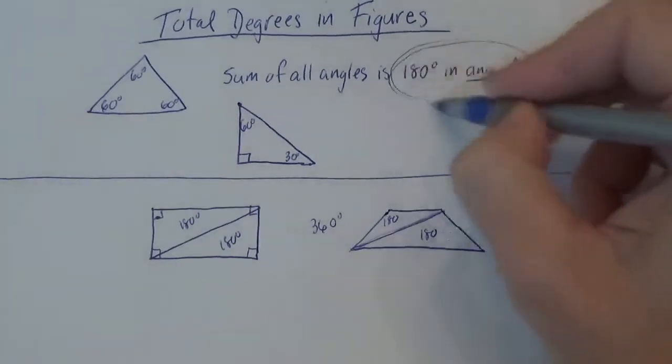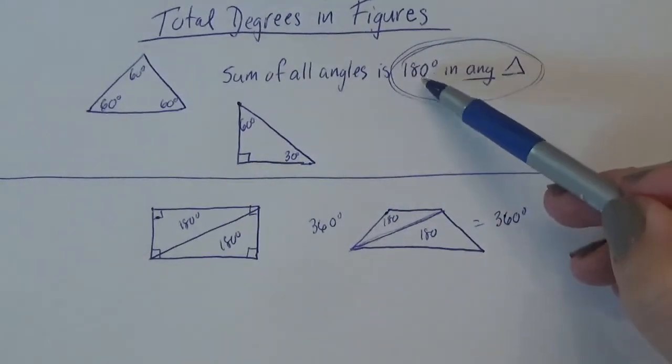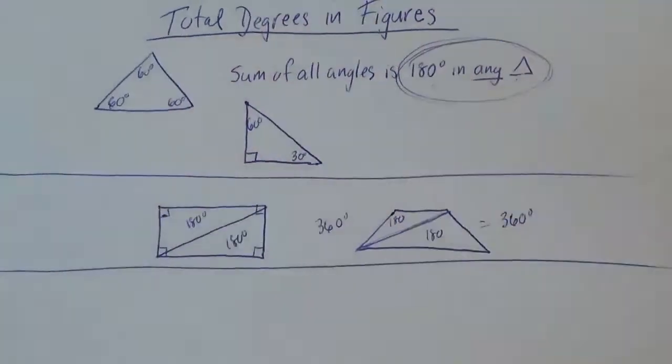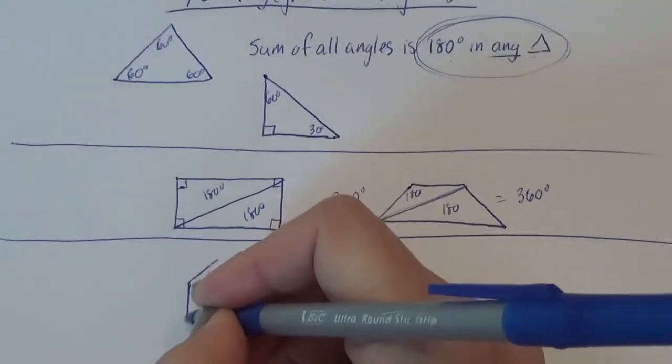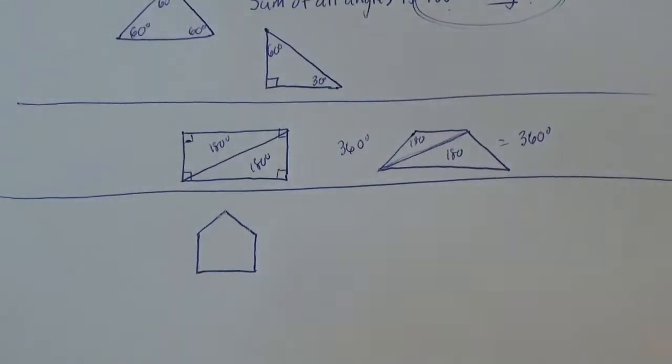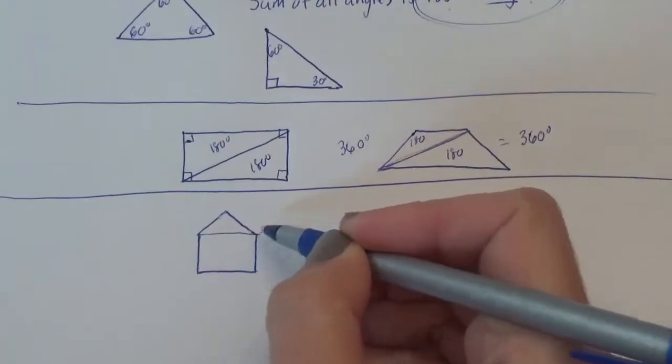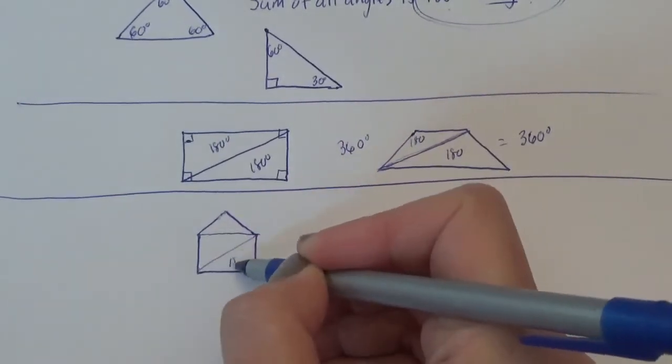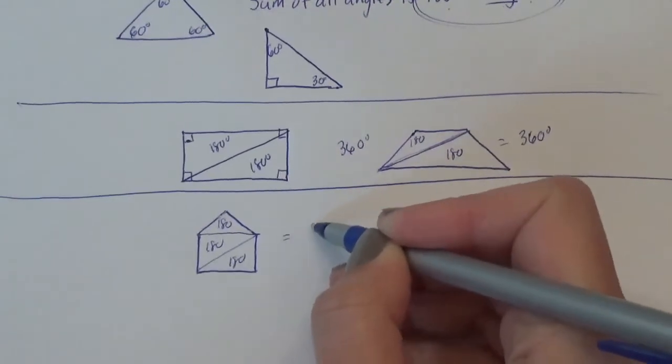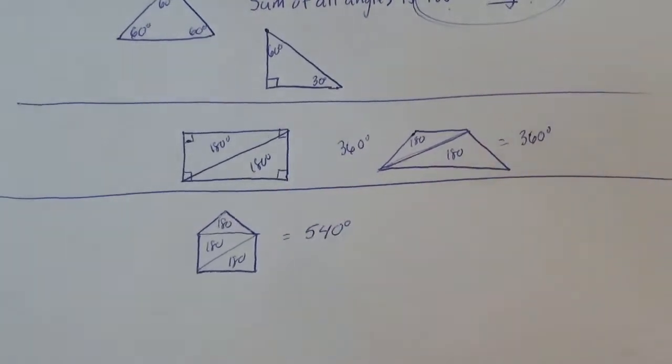The thing to memorize is this. Once you know there's 180 in a triangle, you're good to go. We could keep going. Pentagon. How many total degrees? I don't know. Cut it into triangles. Boom. Boom. There's always going to be three triangles. That's three 180s. That's going to be 540.